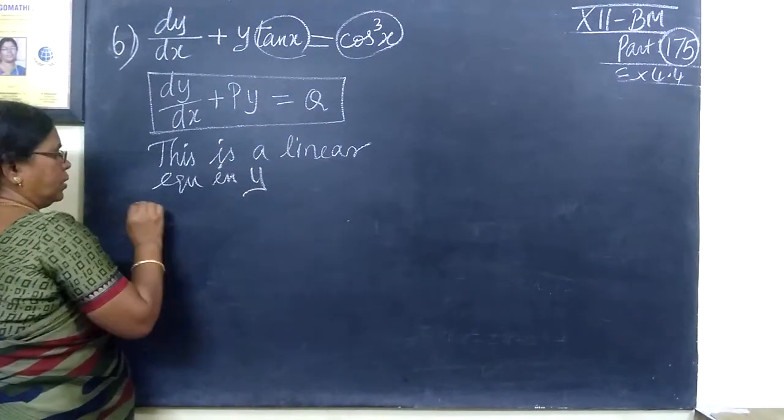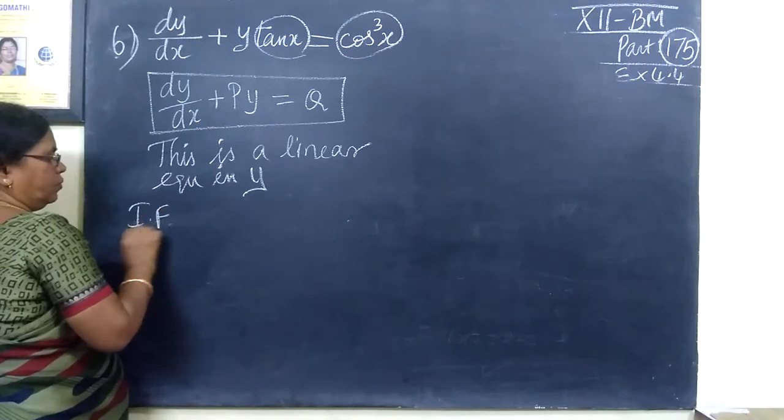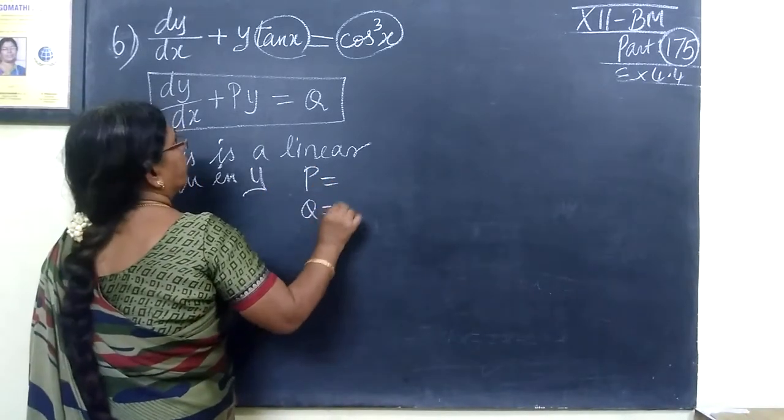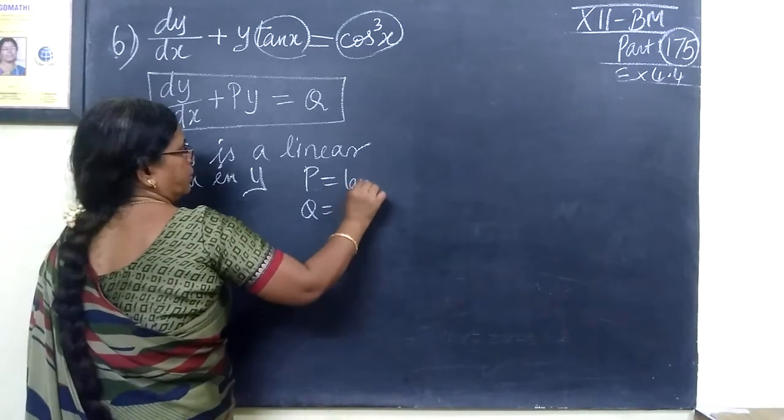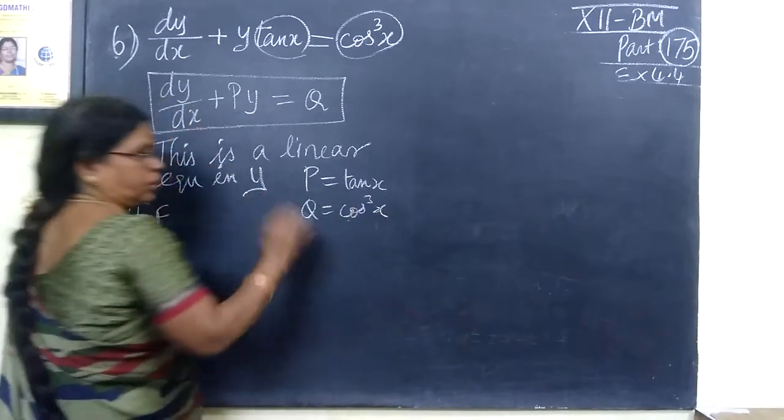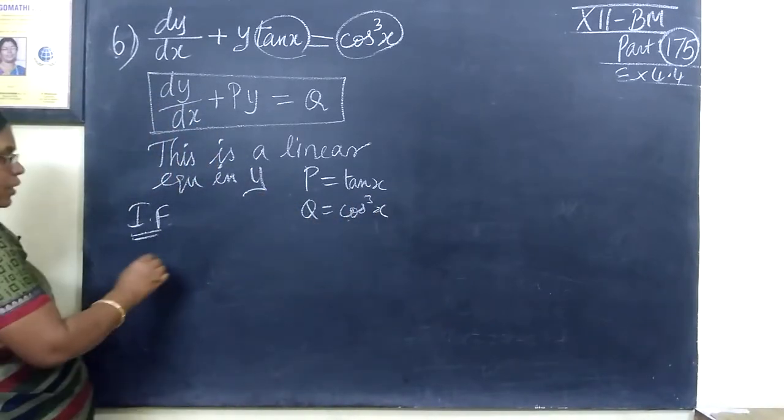Now, immediately, you will find integrating factor. Let's look P and Q. P is tan x, then Q equals cos²x. This is everything you will find integrating factor.